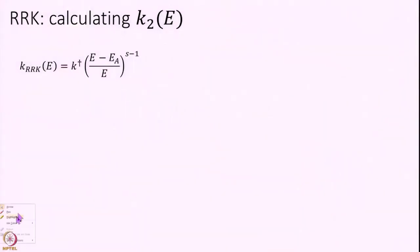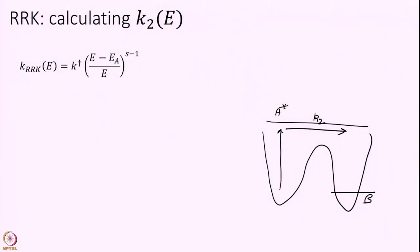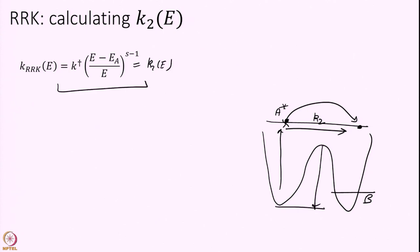The first quantity we have already solved for is K2(E). K2 is the rate at which A* at a given energy goes from the reactant to product B. Within the RRK model, we showed a few modules ago that K2(E) is given by: K2(E) = K† × ((E − EA)/E)^(S−1), where E is the total energy, EA is the barrier height, and S is the number of oscillators.